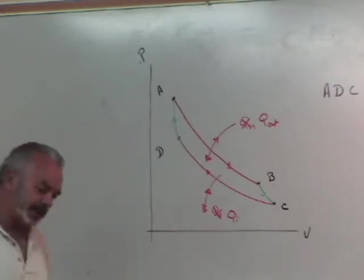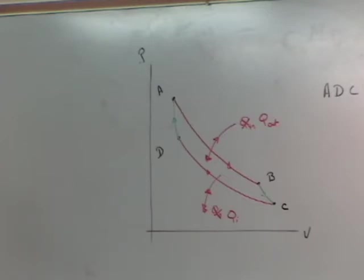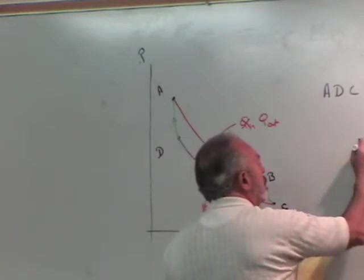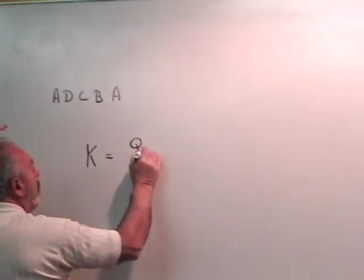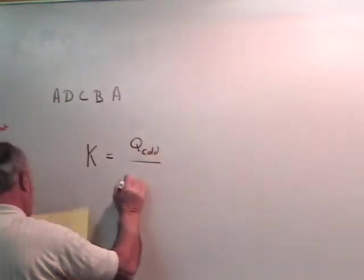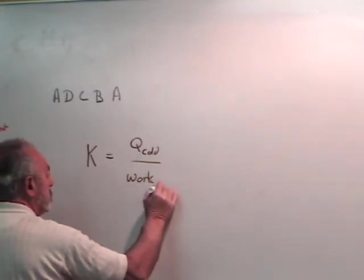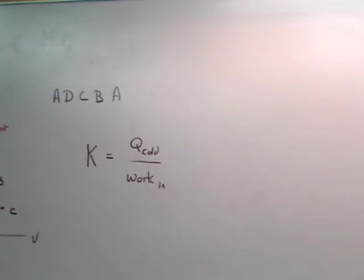We have a refrigerator, and they discuss not the efficiency, because you're not doing work. You actually have to do work on the system. And so, instead of talking about efficiency, they talk about something called coefficient of performance. The coefficient of performance is K, and I'm going to use a capital K for coefficient of performance. It's how much heat do you pull out of a cold reservoir, and how much work does it take to get that done. So, a refrigerator, you have to do work on the system to run it backwards. You don't get work out. And because we call the coefficient of performance, it's like the efficiency. It's just how much work you have to do to move a certain amount of heat.